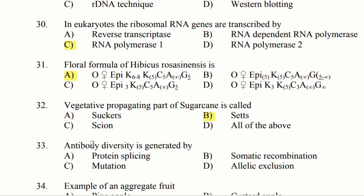Next question: Antibody diversity is generated by. Option A: protein splicing. Option B: somatic recombination. Option C: mutation. Option D: allelic exclusion. Antibody diversity is generated by allelic exclusion.